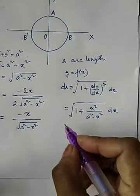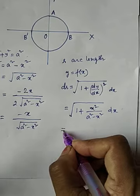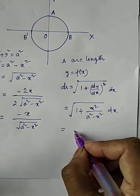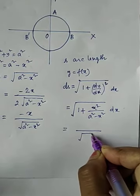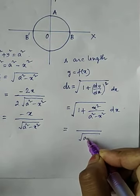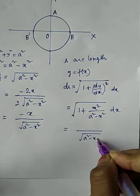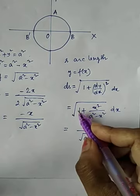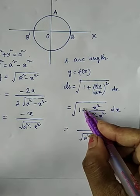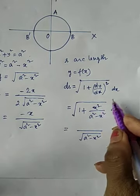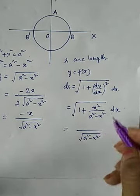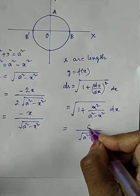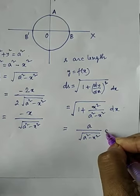If we take the LCM, the denominator becomes √(a² − x²) and the numerator becomes a² − x² + x², which simplifies. So √(a²) = a, giving ds = a / √(a² − x²) dx.